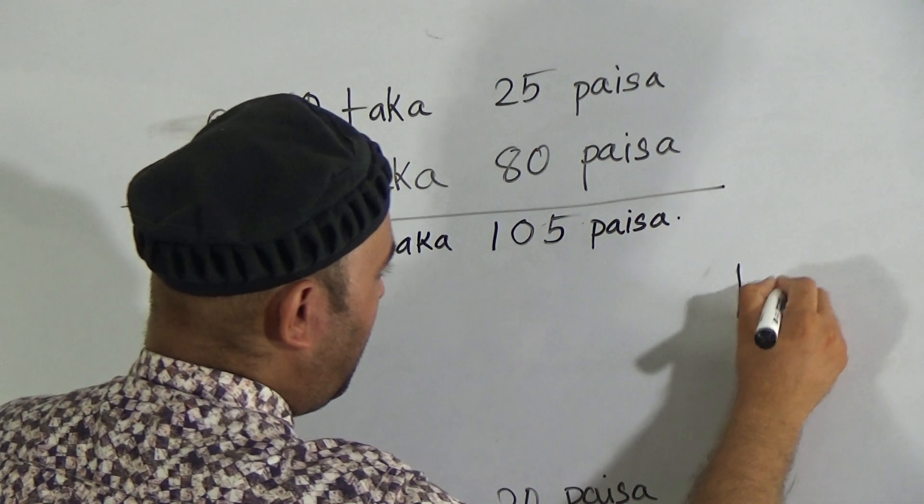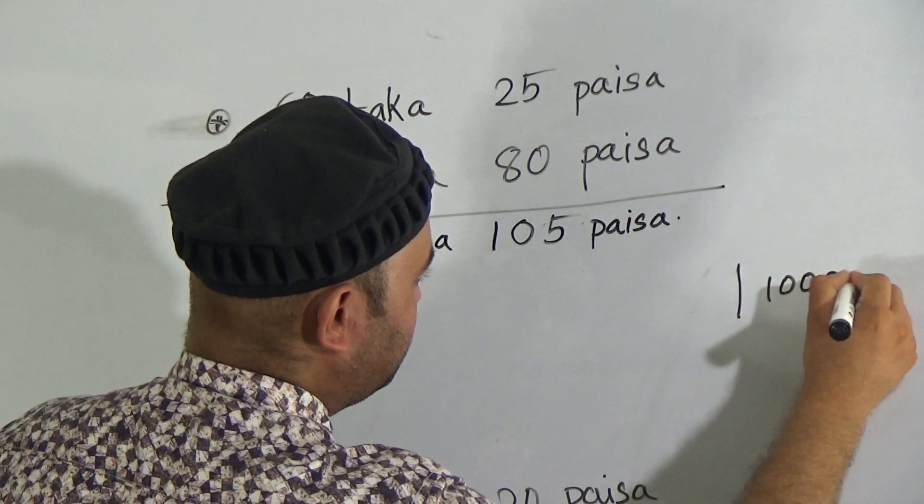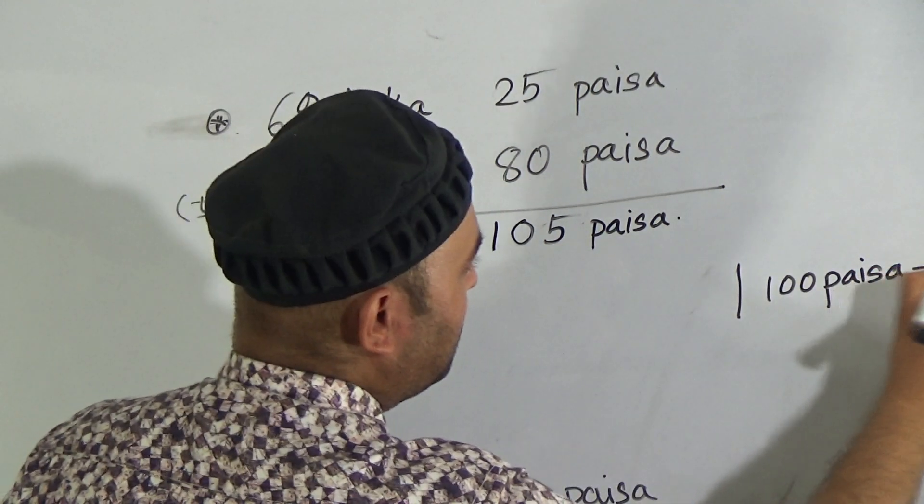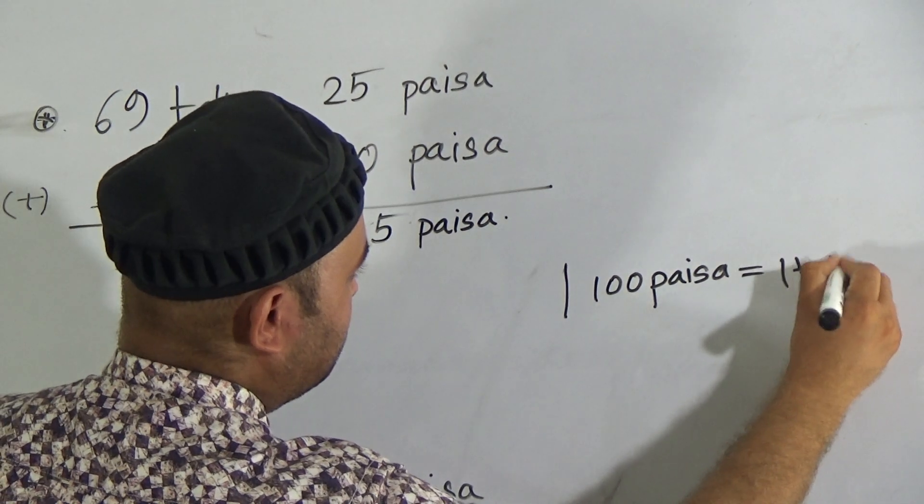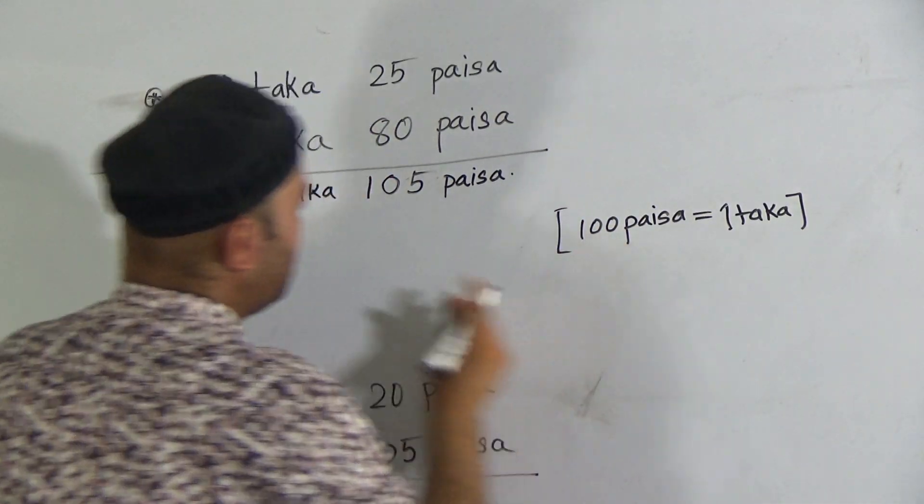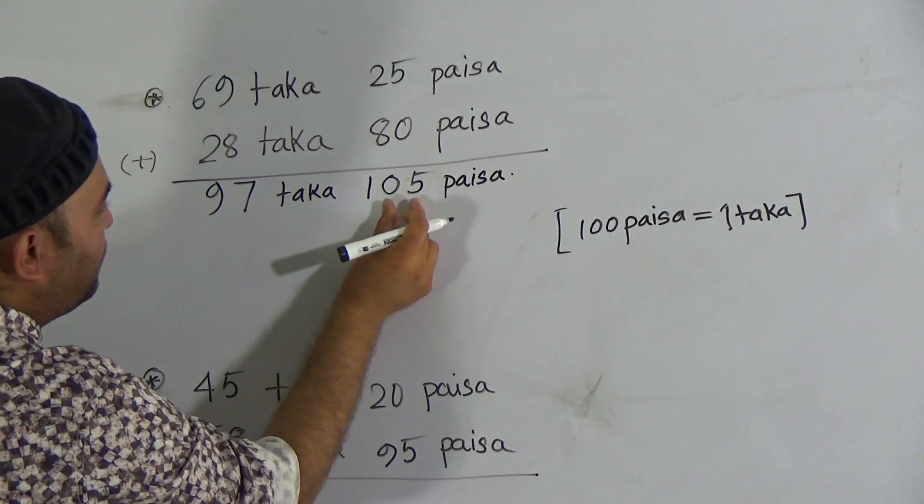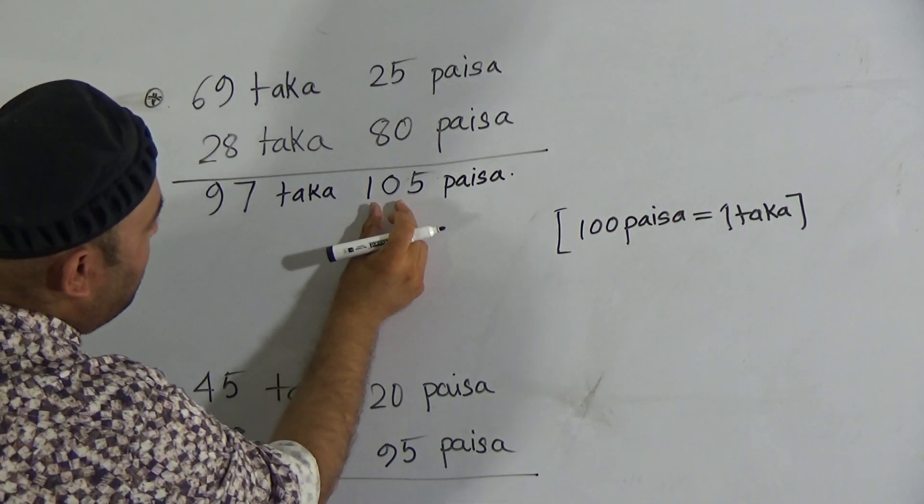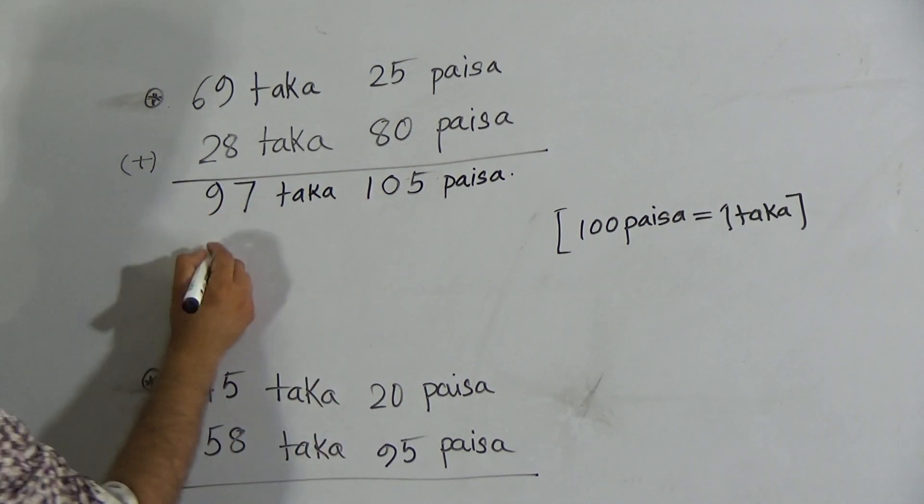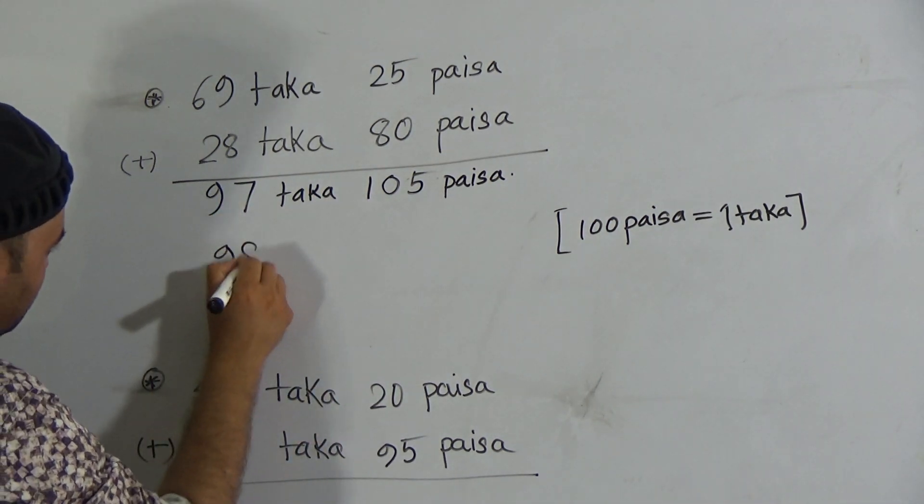My dear students we know that 100 paisa makes one taka. Since here is 105 paisa, if we take 100 paisa from here then it will be 98 taka.